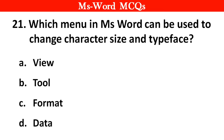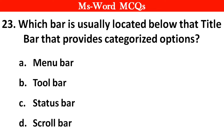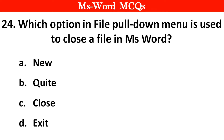Next question: Which menu in MS Word can be used to change character size and typeface? Options: A) View, B) Tool, C) Format, D) Data. Right answer is option C, Format. Next question: Which key should be pressed to start a new paragraph in MS Word? Right answer is option B, Enter key. Next question: Which bar is usually located below the title bar that provides categorized options? Options: A) Menu bar, B) Tool bar, C) Status bar, D) Scroll bar. Right answer is option A, Menu bar. Next question: Which option in the File pull-down menu is used to close a file in MS Word? Right answer is option C, Close.